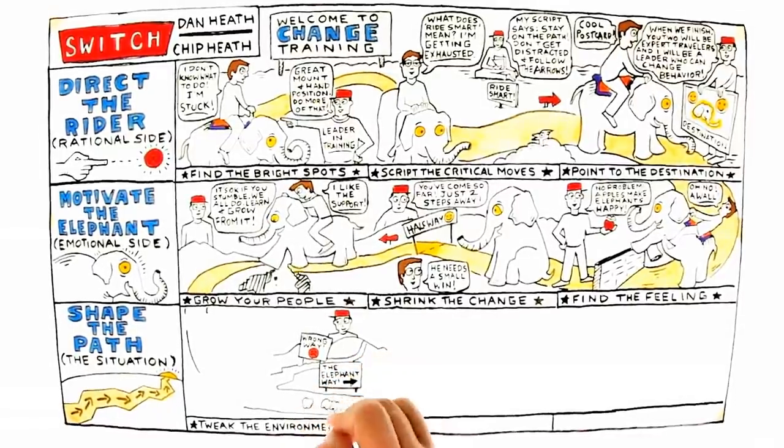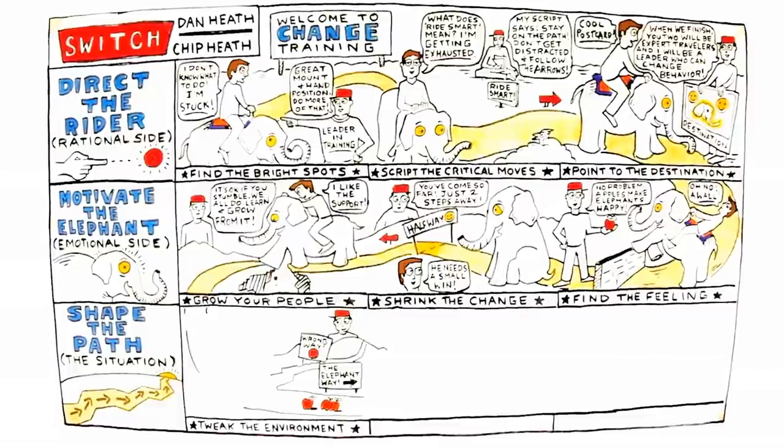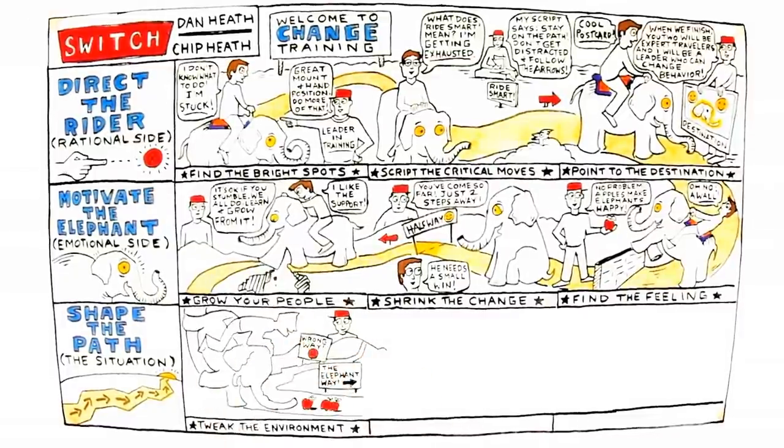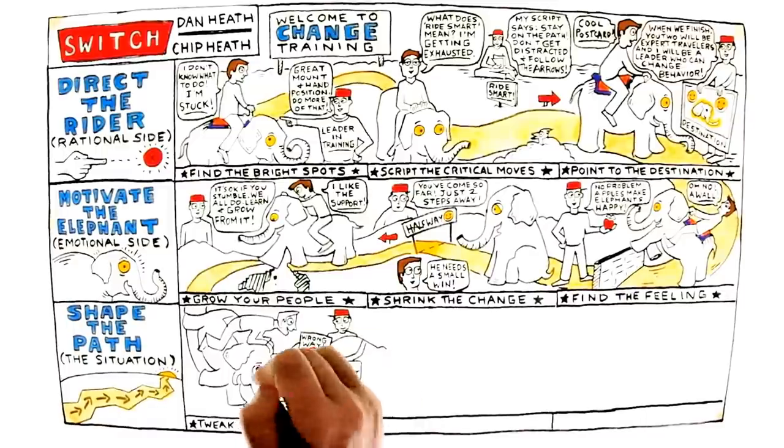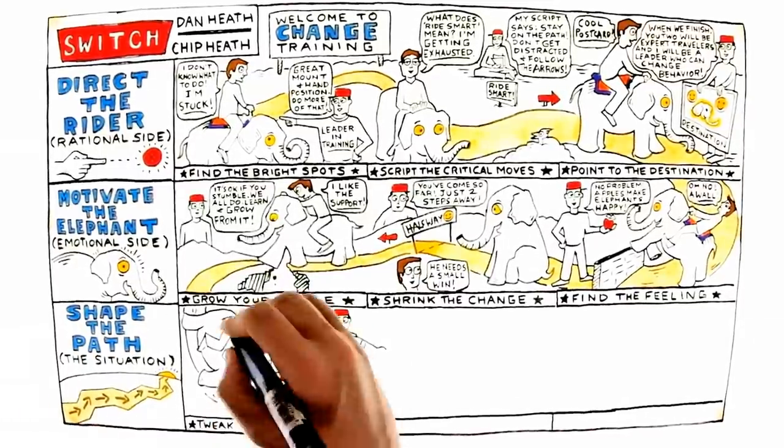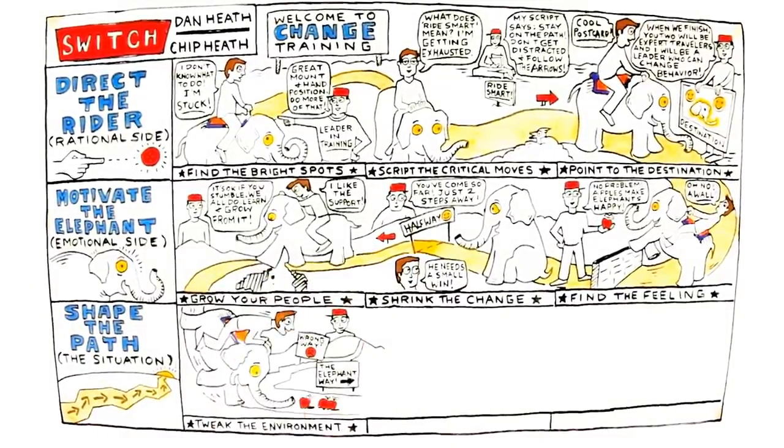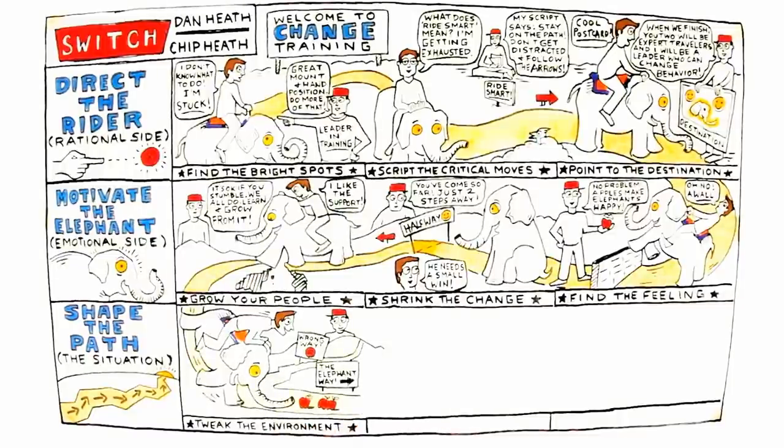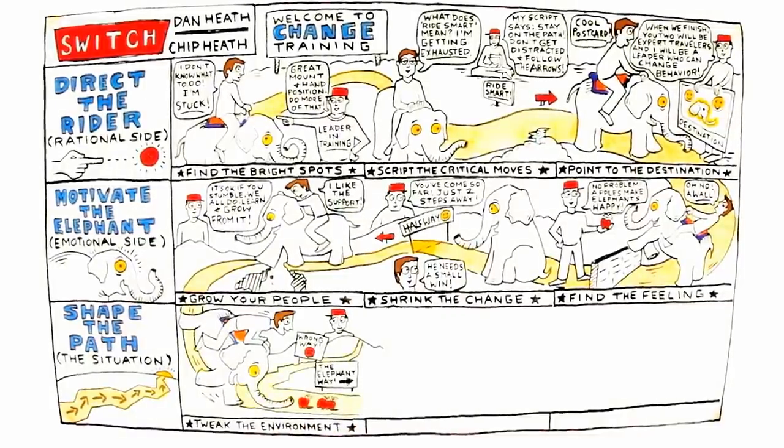And they can make the journey easier by tweaking the environment, which makes the right behavior easier to perform and the wrong behaviors a lot tougher to perform. As the Heath Brothers say, when the situation changes, the behavior changes. So change the situation.